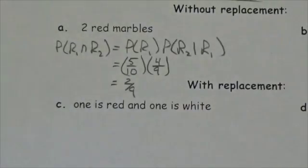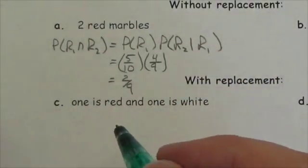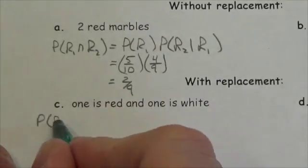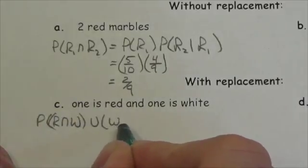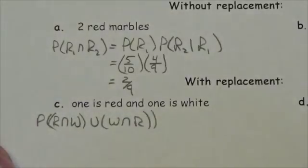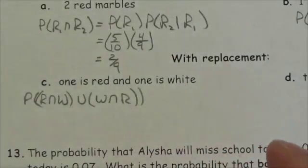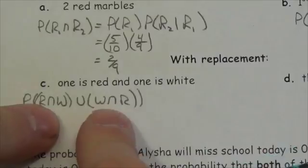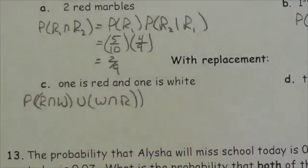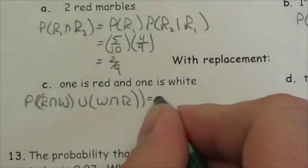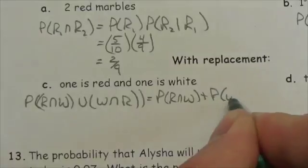Now change the scenario — let's assume we're putting the marble back. One is red and one is white. That could be red then white, or white then red. There are two different ways this total scenario could play out, and those are mutually exclusive — it's not possible for red-then-white and white-then-red to happen simultaneously if order matters. So this is going to be the probability of red and white plus the probability of white and red.